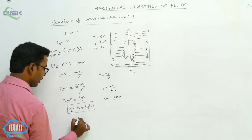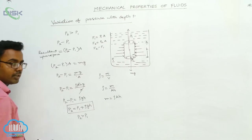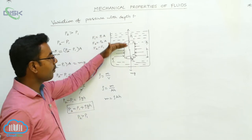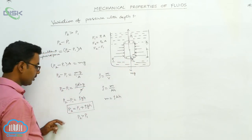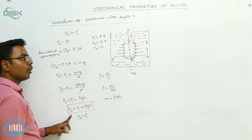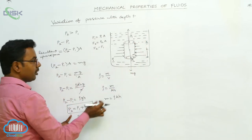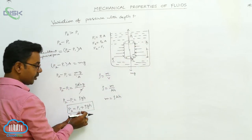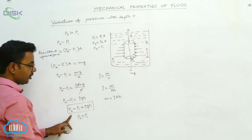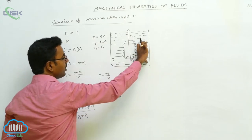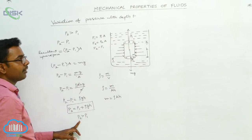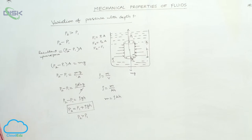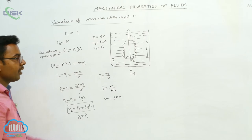From this equation we understand that P2 is greater than P1 — as we go deeper, the pressure increases. P1 is the pressure on the top surface and P2 is the pressure on the bottom surface. P2 = P1 + ρgH, showing that at a depth H, the total pressure is P1 plus ρgH. As the depth increases, the pressure also increases. This is how we understand the variation of pressure with depth.